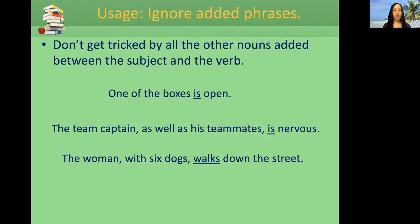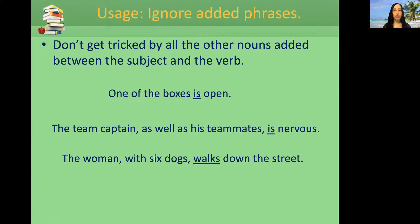Don't get tricked by all the other nouns added between the subject and the verb. For example: 'one of the boxes is open.' Here's another one: 'the team captain, as well as his teammates, is nervous.' And: 'the woman with six dogs walks down the street.' Don't get fooled by the other nouns — just one is open, we're talking about the captain.